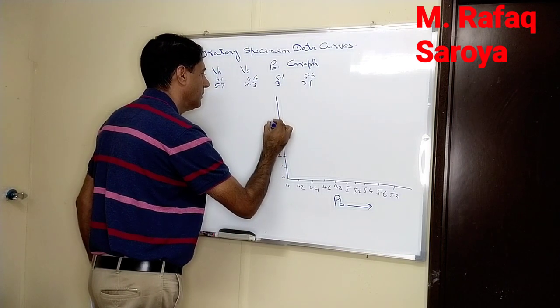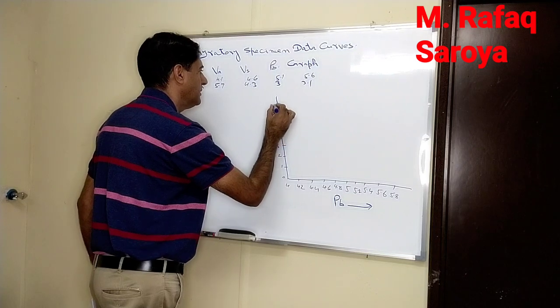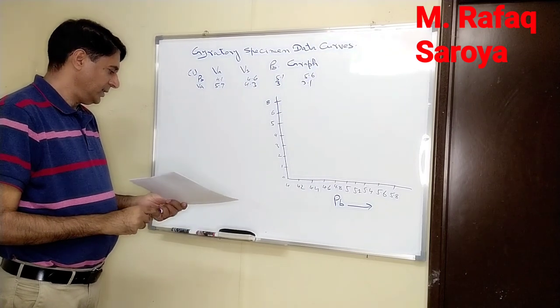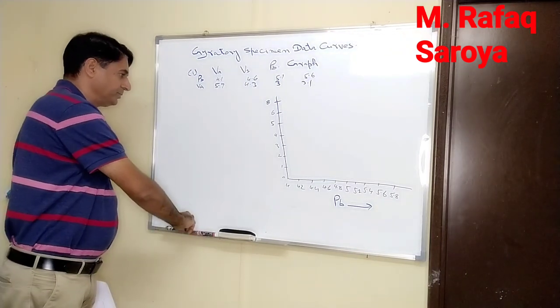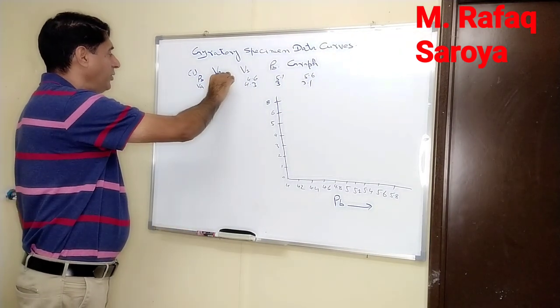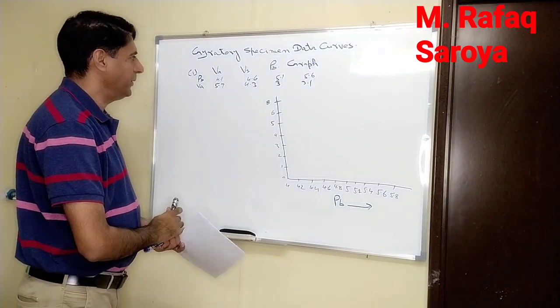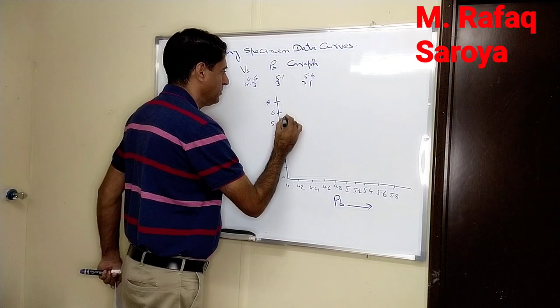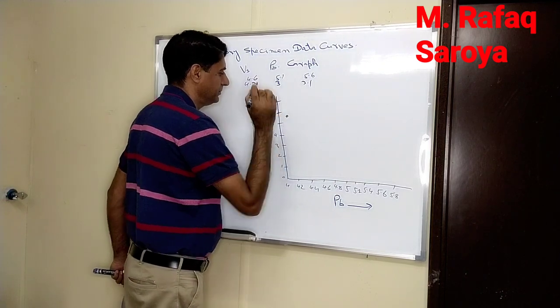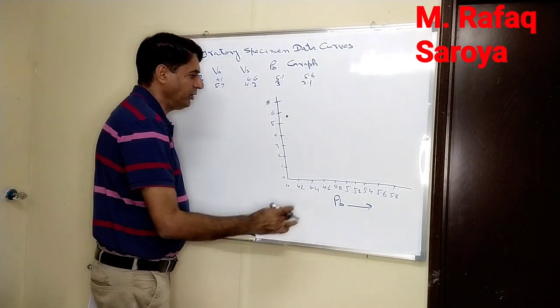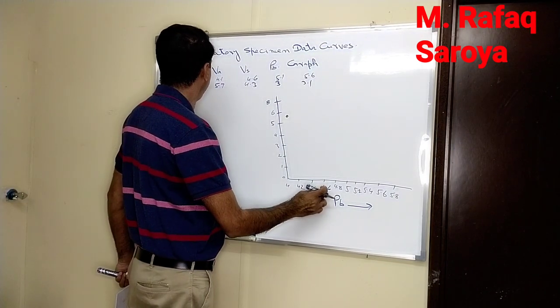Let me show you: when my binder content is 5.1, the air void is 5.7, so I am at this point. When my binder content is 4.6, the air void is 4.3, so I am nearly at this point.